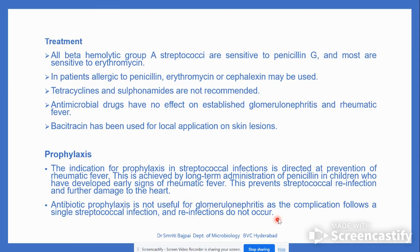Treatment: all beta-hemolytic Group A Streptococci are sensitive to penicillin G. For patients allergic to penicillin, erythromycin or cefalexin may be used. Tetracycline and sulfonamides are not recommended. Prophylaxis is directed at prevention of rheumatic fever, achieved by long-term administration of penicillin in children who have developed early signs of rheumatic fever, as it is a sequel to post-streptococcal infection.